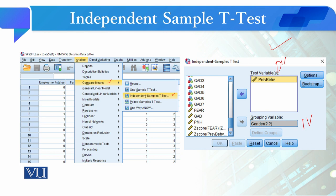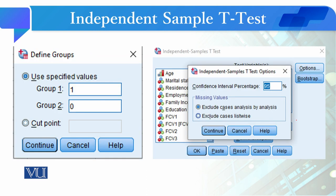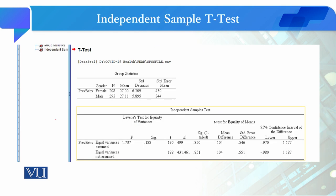Here we want to see the effect of gender on preventive behavior. When you select the grouping variable, it will ask you to provide the group values — you enter the coding you used in your SPSS sheet. For example, if gender was coded as 0 and 1, or 1 and 2, you enter those values accordingly. We will check this at the 95% confidence interval. After clicking Continue and OK, two tables will appear in the output view.